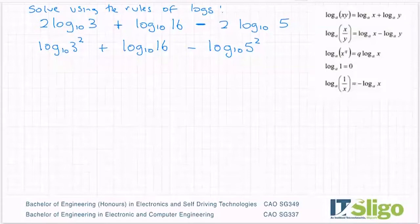And then I'm going to use these top two rules here. The top one tells me that when I've got two indices that are added, I can multiply the numbers together. This one tells me when I've got two numbers that are subtracted, I can divide them. Now you can see I have an addition and a subtraction. What you generally do in maths is you work from left to right.